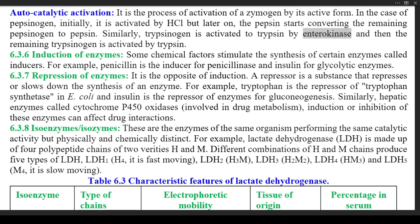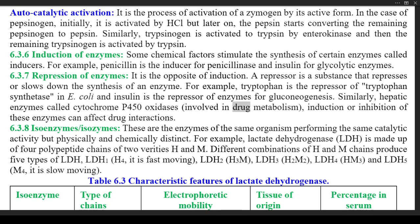6.3.6 Induction of Enzymes — some chemical factors stimulate the synthesis of certain enzymes, called inducers. For example, penicillin is the inducer for penicillinase, and insulin is the inducer for glycolytic enzymes. 6.3.7 Repression of Enzymes — it is the opposite of induction. A repressor is a substance that represses or slows down the synthesis of an enzyme. For example, tryptophan is the repressor of tryptophan synthetase in E. coli, and insulin is the repressor of enzymes for gluconeogenesis. Similarly, hepatic enzymes called cytochrome P450 oxidases are involved in drug metabolism — induction or inhibition of these enzymes can affect drug interactions.